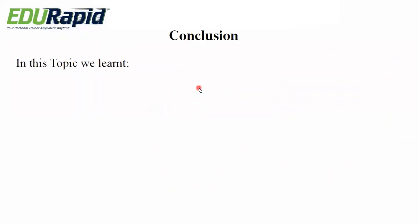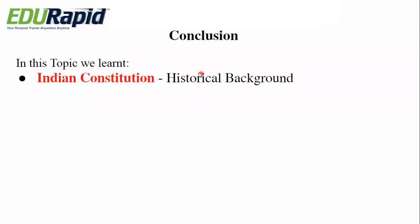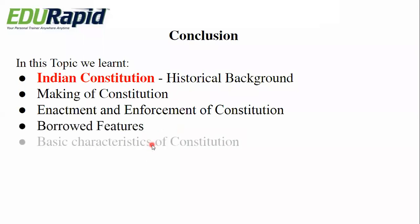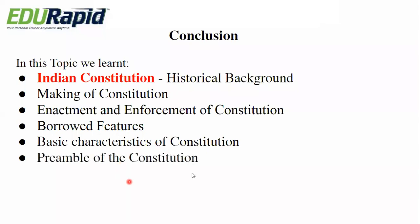In summary, in this topic we learned about the Indian constitution: how it evolved over a period of time through the historical background, the making of the constitution, enactment and enforcement, borrowed features, basic characteristics, and the preamble of the constitution. If you have any doubts, please ask. Thank you.